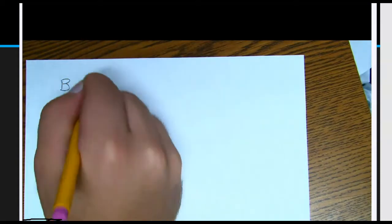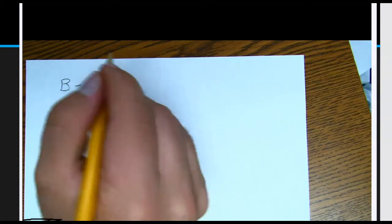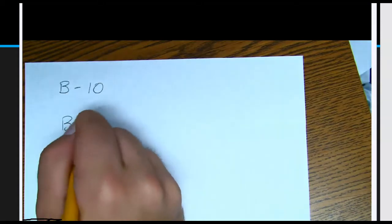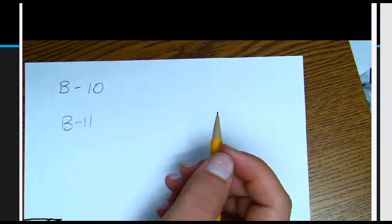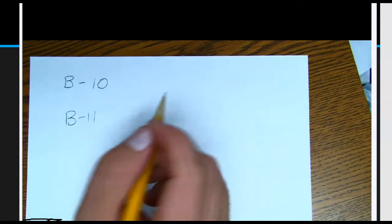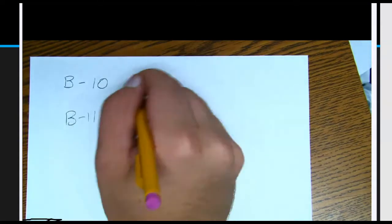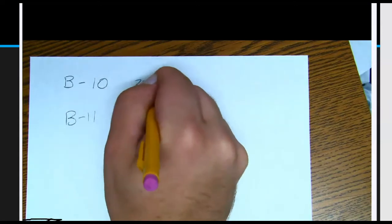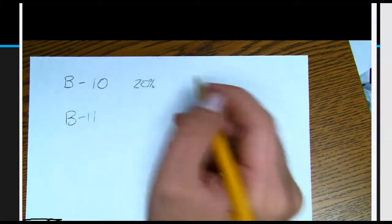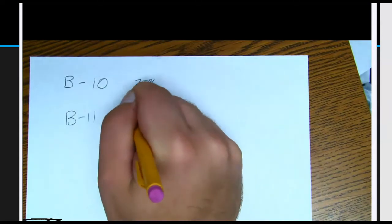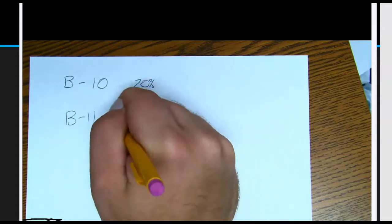So boron has two different neutrons. I think I've shown you this one before, but I'm going to write out the steps on how to solve it. So Boron 10 is 20% of the compound. Boron 11 is 80%.